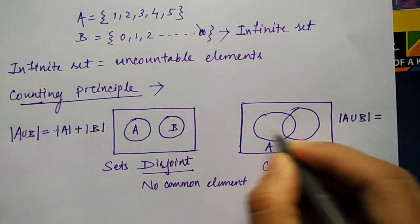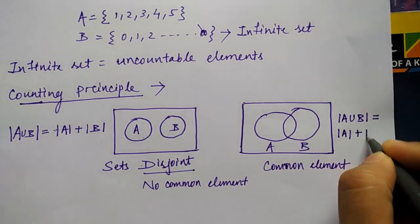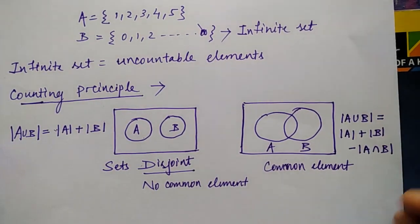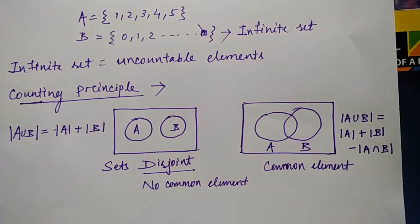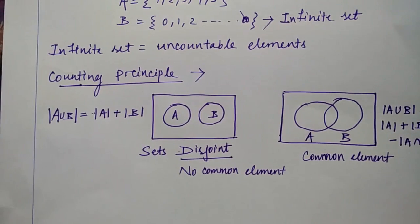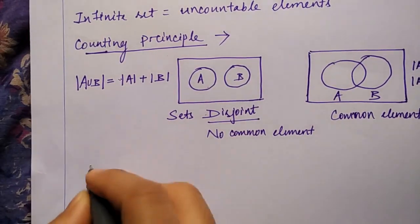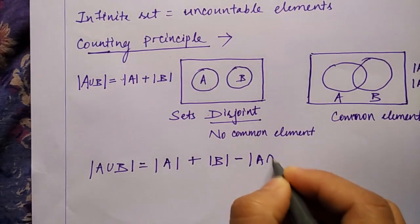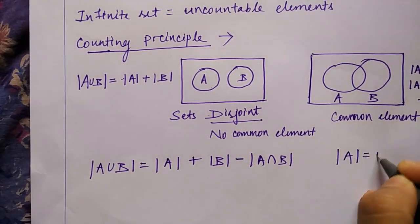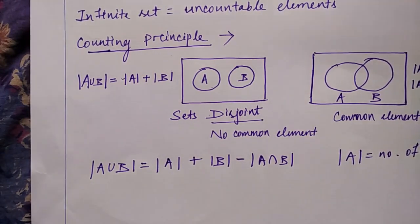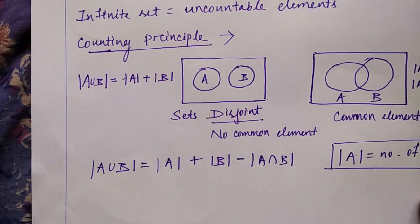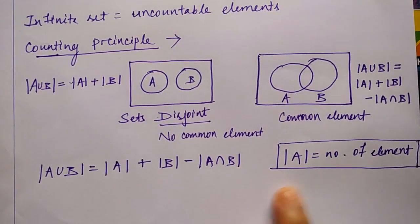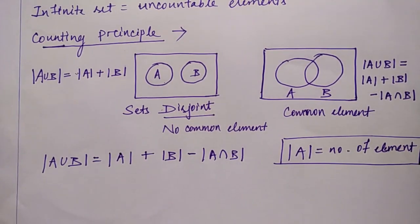But in the second case (non-disjoint sets), when performing A∪B there are some common elements, so the formula is |A∪B| = |A| + |B| - |A∩B|. Here, 'mod' means the number of elements — remember, mod means number of elements — and this formula gives the total elements after performing the union operation.